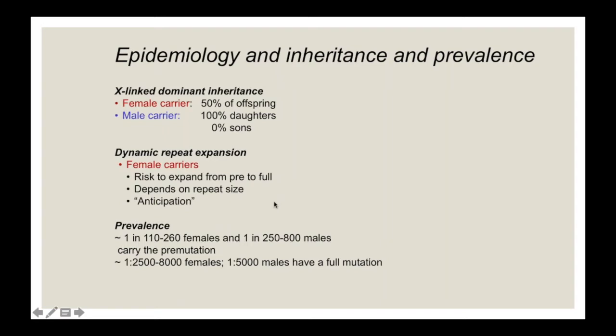The risk of expansion depends on the CGG repeat size but also on AGG interruptions, which are anchors found within the CGG element. There is also genetic anticipation — longer expansions are associated with earlier disease onset in the next generation, although age of onset is not entirely accounted for by CGG repeat size alone. The prevalence of the premutation is about 1 in 150–260 females and 1 in 250–800 males in the general population.